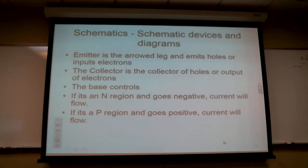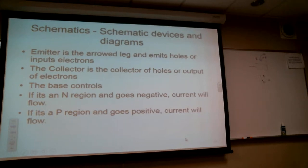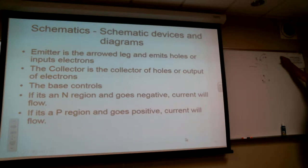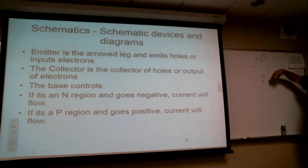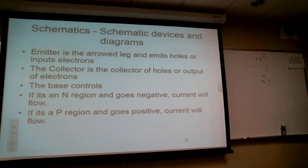The collector collects holes — positives — and sends out negatives. So if you're going to have a power supply, you want the negative on one side so that negatives go in that direction. We're always going to go negative to positive, and holes go from positive to negative. Depending on whether it's an NPN or a PNP, I'm going to want the arrow to face the same way the arrow faces in a diode.